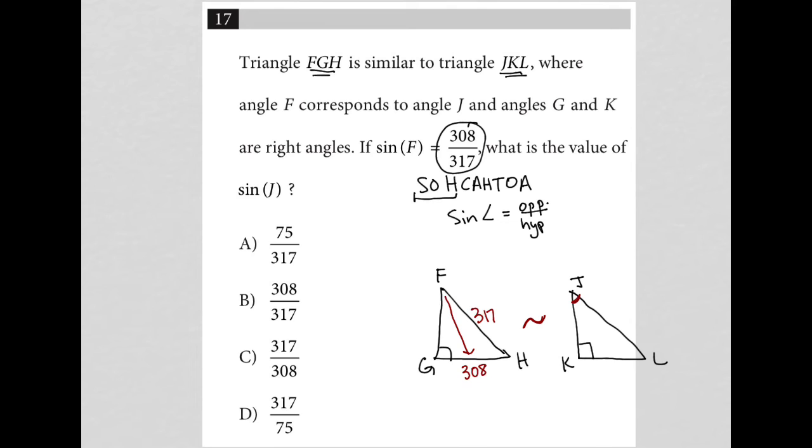The fact that they're similar means all their corresponding angles are equal to each other. Now it doesn't mean their side lengths are equal to each other, but it does mean their side lengths are proportional to each other.